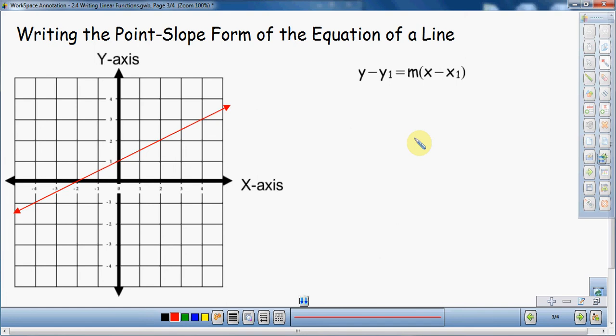In this video, I'm going to talk about writing the point-slope form of the equation of a line. This is a little bit different from a previous video about writing equations. We're going to be using point-slope form, which is written right here: y minus y1 equals m times the quantity x minus x1.